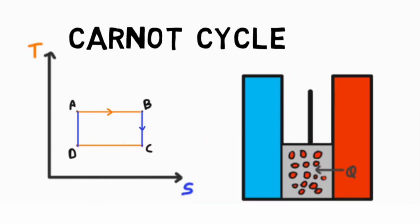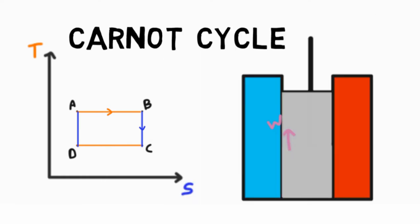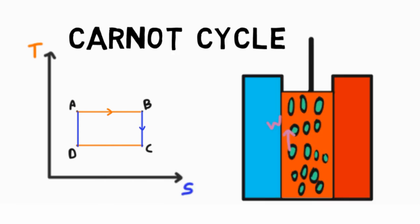Second is a reversible constant entropy process called a reversible adiabatic process, where work is done by the system at the expense of internal energy and the temperature is increased.